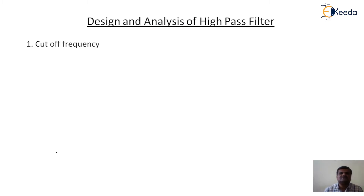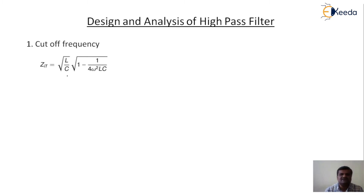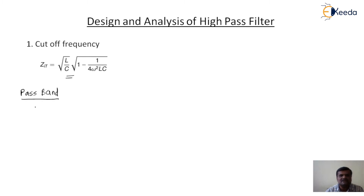First we will calculate the cutoff frequency of the high-pass filter. For that purpose we use the formula of image impedance: Zit equals root(L/C) times root(1 minus 1 upon 4ω²LC). Then, generally there are two bands for a high-pass filter. The first is the passband. For the passband, Zit is real.